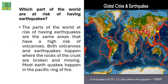Which parts of the world are at risk of having earthquakes? The parts of the world at risk are the same areas that have a high risk of volcanoes. Both volcanoes and earthquakes happen when the rocks of the crust are broken and moving. Most earthquakes happen in the specific region known as the Ring of Fire.